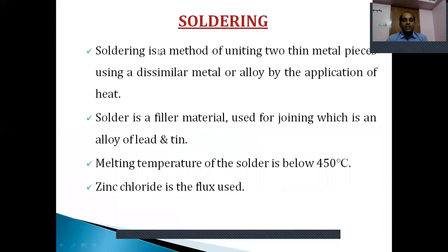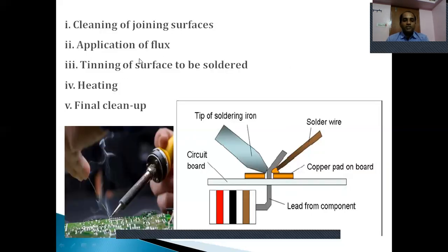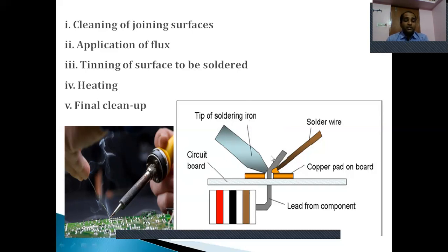The second step is application of flux. For the soldering process, the flux used is zinc chloride. Why do we use flux? When heat is applied to the surface of the metal plates to be joined, there is some oxidation. Due to that oxidation, the joint developed may not be perfect — you may have some defects. Hence, to prevent that oxidation, we apply the flux — zinc chloride — to the surfaces where we want to join them, so that the oxidation process can be prevented.